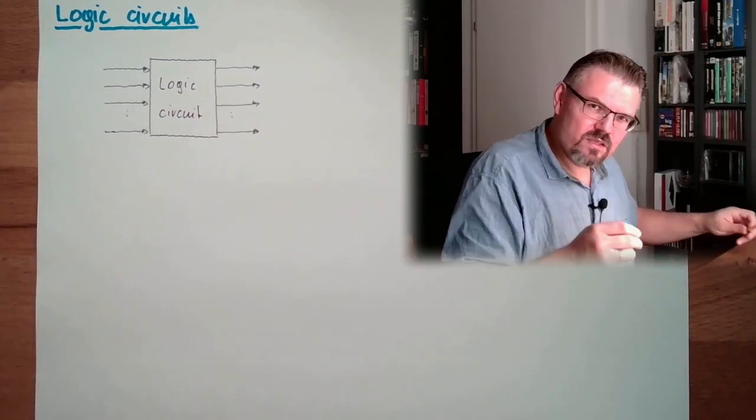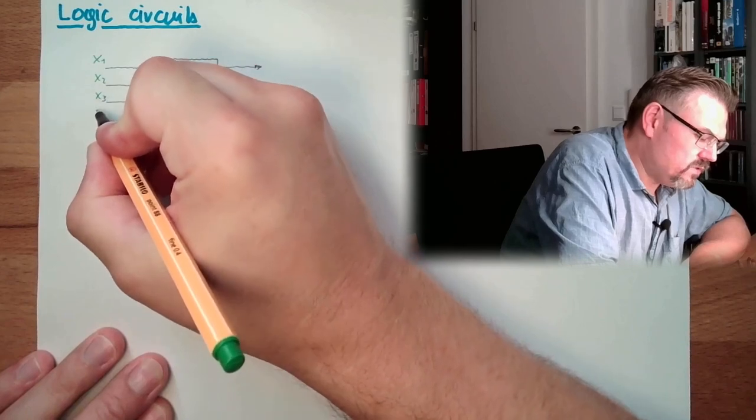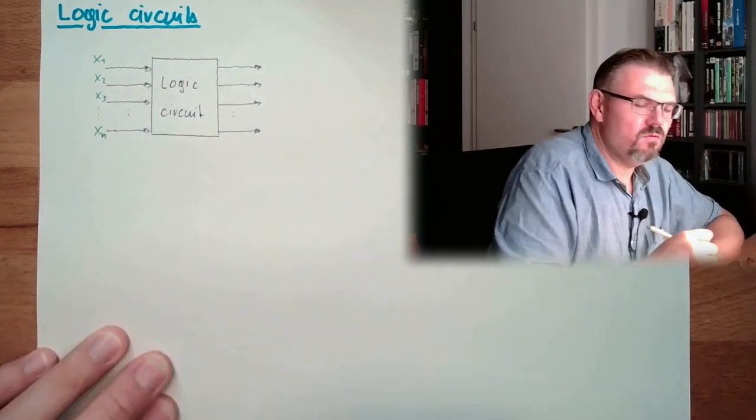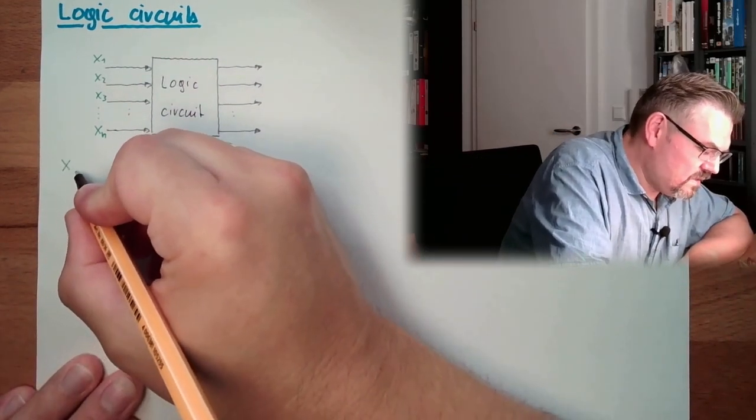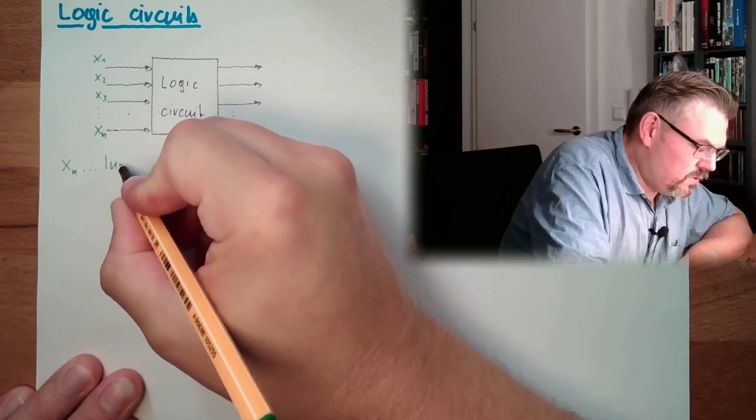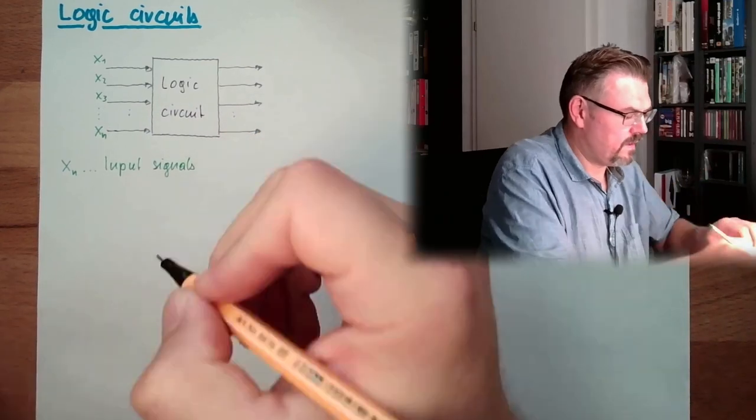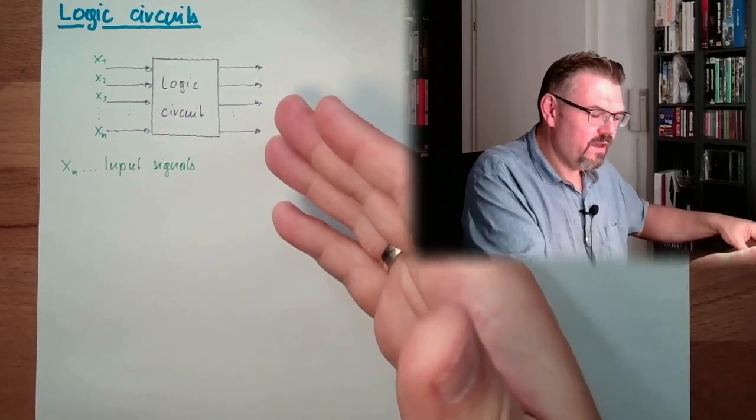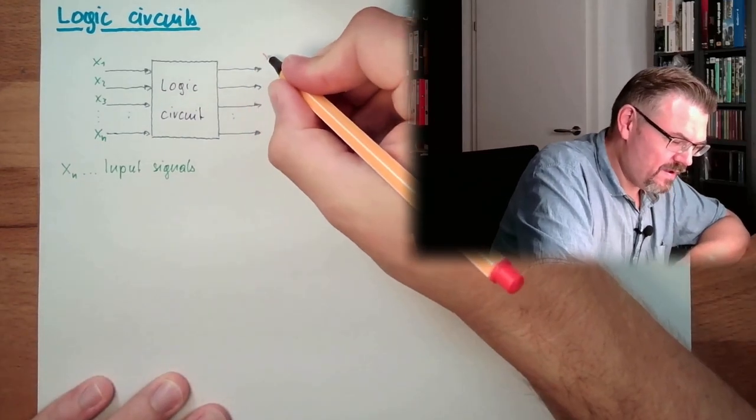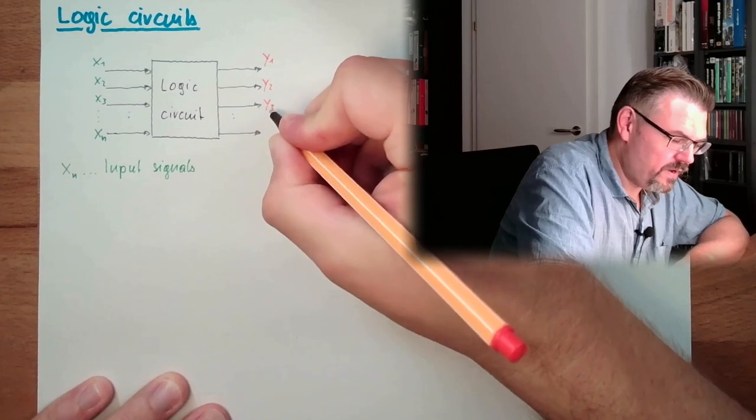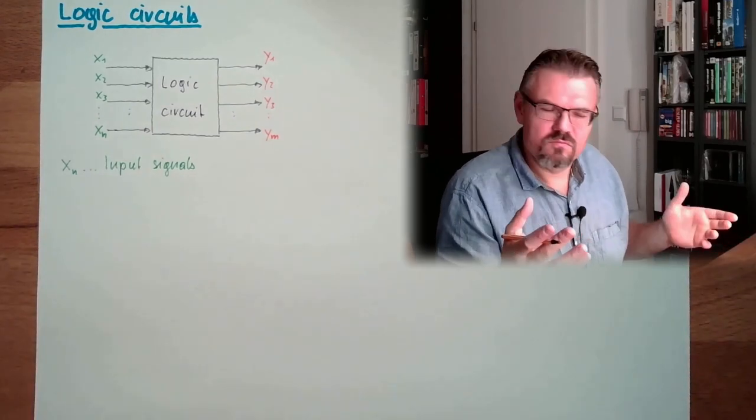The input signals are usually referred to as x. So we have an x1, we have an x2, we have an x3, and so on. And we might have an xn. We might have several different input signals. And here, on the other hand, we have the y's. We have y1, we have y2, we have y3, and so on. And we have ym. I write m because the count may be different.